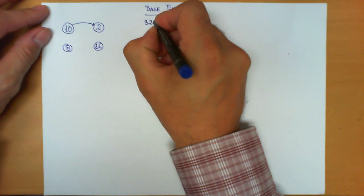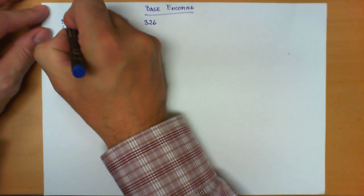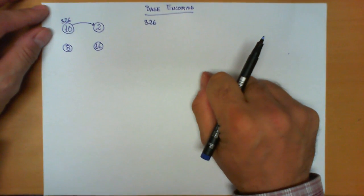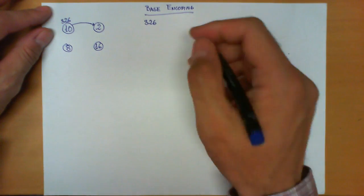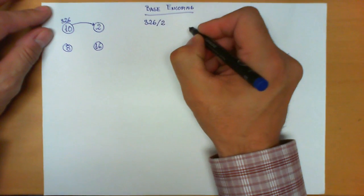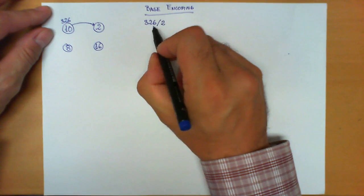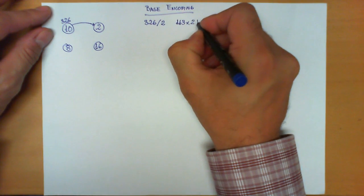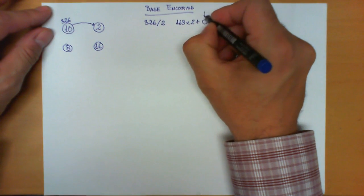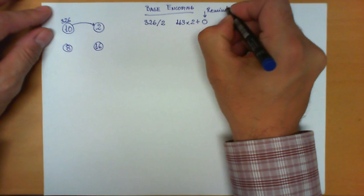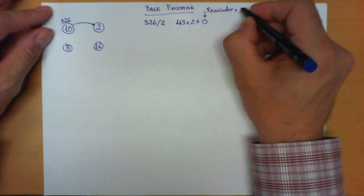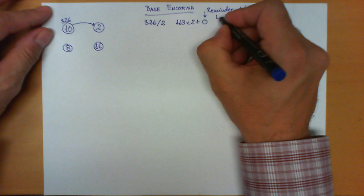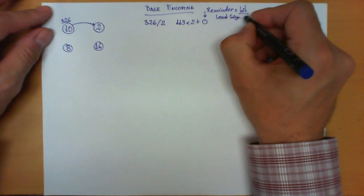Let's take the number 326. 326 is a number represented in base 10. How do we translate this number between base 10 and base 2? The technique is called successive divisions. What you do is keep dividing it by 2 repeatedly. If we divide 326 by 2, we obtain the quotient 163 with remainder 0. This remainder is very important because it is going to be the least significant bit of the result.